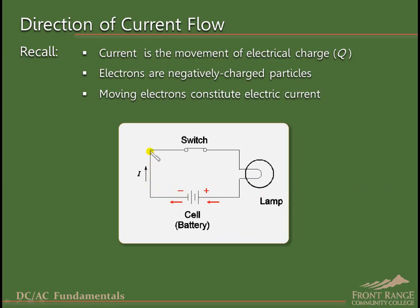If there is a conductive path through which the electrons can move under the influence of this force, they travel through the wires, through the closed switch, through the load, and return to the positive terminal of the battery.